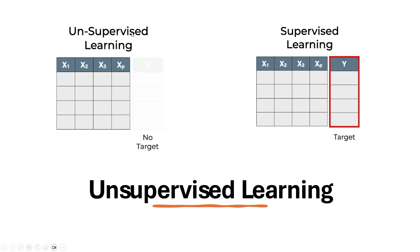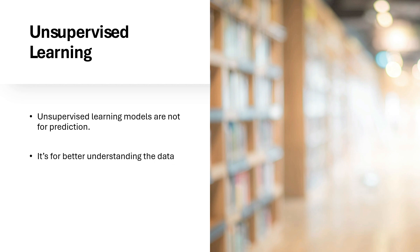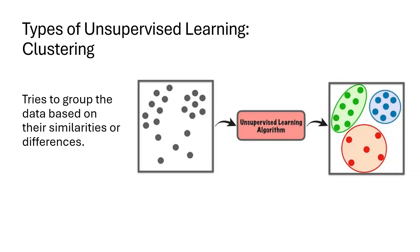Today we will talk about unsupervised learning, where there is no target variable. In an unsupervised learning model, the training features do not have any target or goal to predict or forecast something. Unsupervised models are not for prediction — they are for better understanding of the data or to find structure in the data. In this video we will talk about unsupervised models on a high level, and in my later videos I will start working on different models.